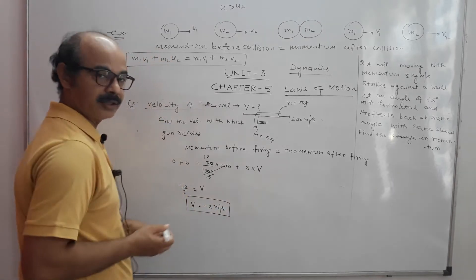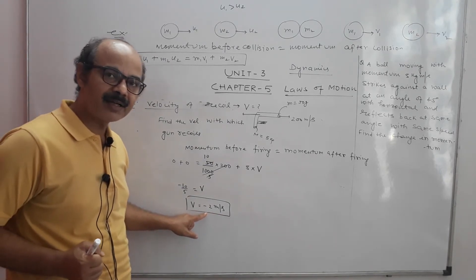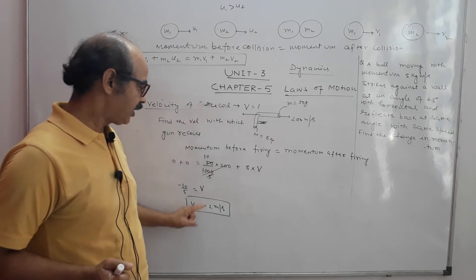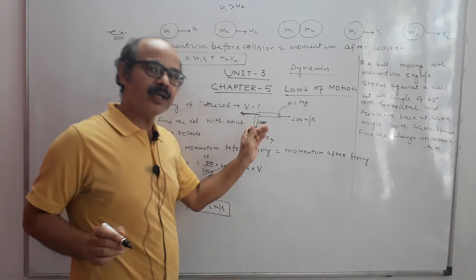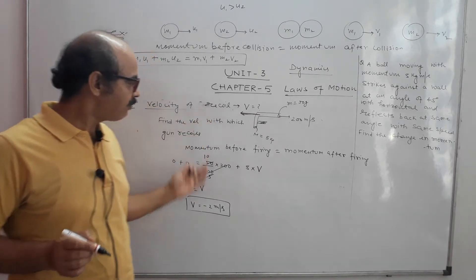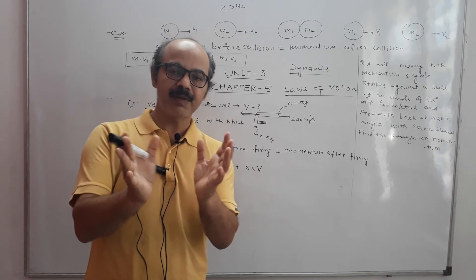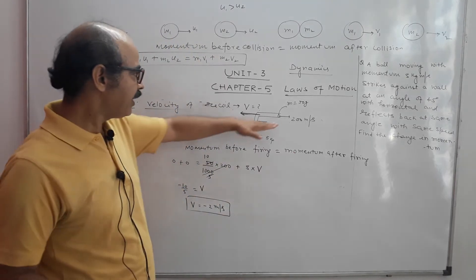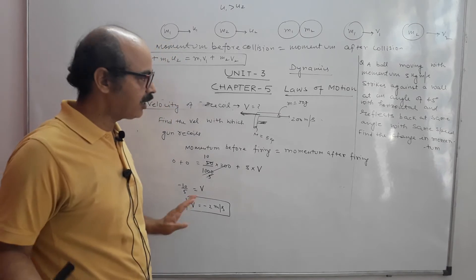The gun's velocity will be minus 2 meters per second. The negative sign means opposite direction — this is a vector quantity, so negative means the gun moves in the opposite direction. If the bullet is fired in the forward direction, the gun recoils in the backward direction. This is conservation of linear momentum applied to an isolated system.